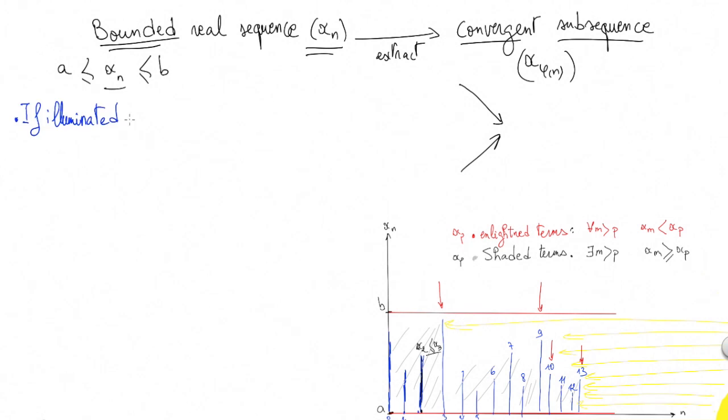What happens if illuminated terms are infinite? If this is the case, we know for sure that the subsequence of illuminated terms can only be decreasing. As we see here, the next illuminated term is always lower than the previous one, otherwise it will hide it.